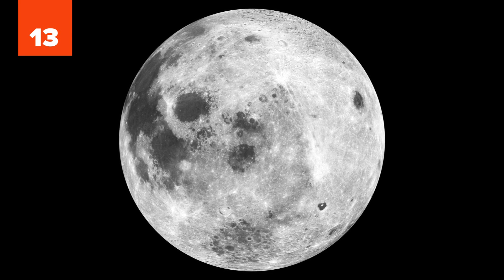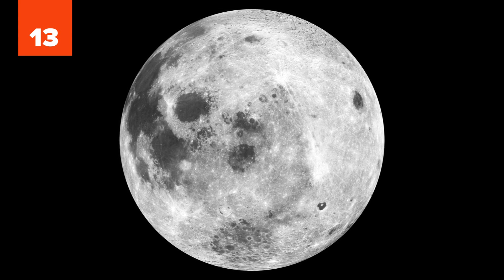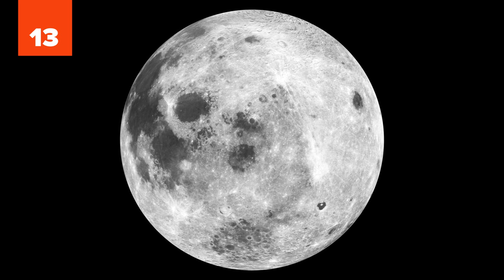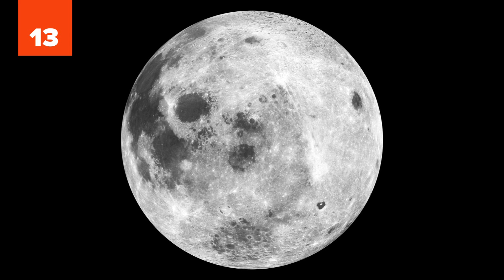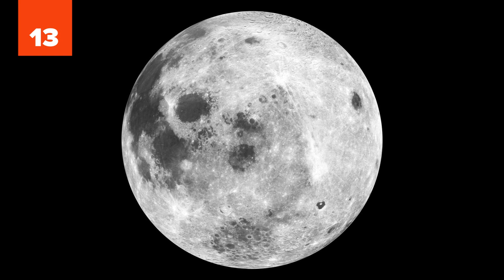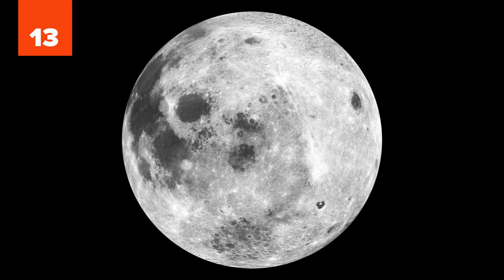However, the most widely accepted theory is that the moon was formed when a large object, about the size of Mars, slammed into Earth billions of years ago. The collision then turned the newly formed Earth into a molten ball of rock and ejected material into orbit.